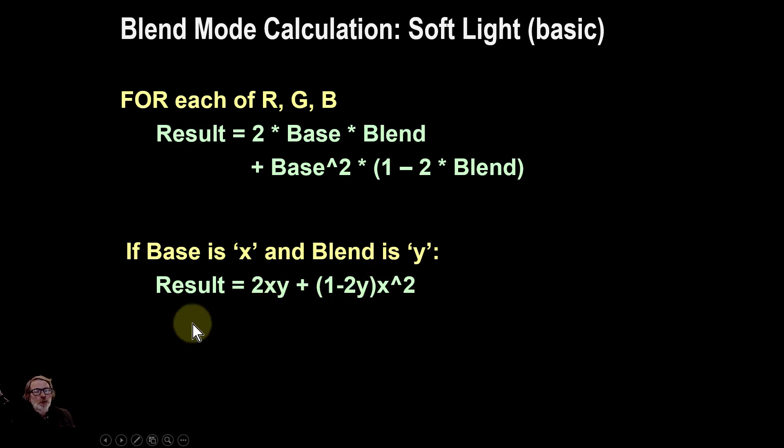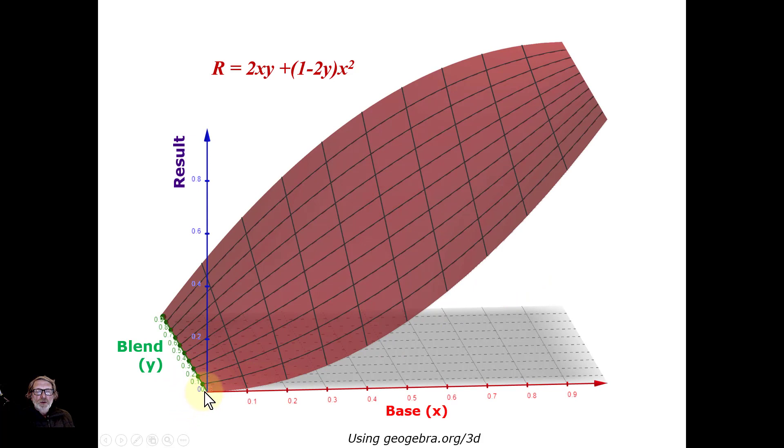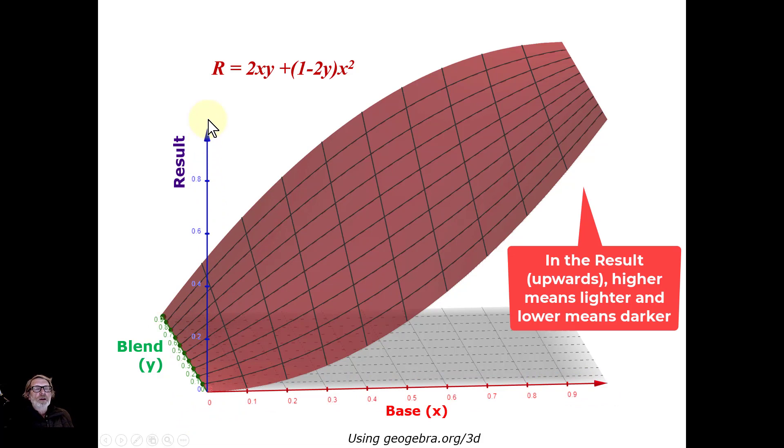In fact, when you plot it, because you've got x and y's in here for a third variable which is the result, you need a 3D plotter. And if you look online you'll find a number of plots. So I used one here called geogebra.org/3d. So here's that formula from the previous page. Twice the base times the blend plus 1 minus 2 times the blend times the base squared. And if you put that into a 3D plotter you get this. So you've got the base going in this direction, the blend going backwards that way, and upwards you've got the calculated result.